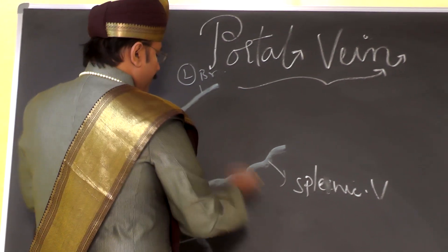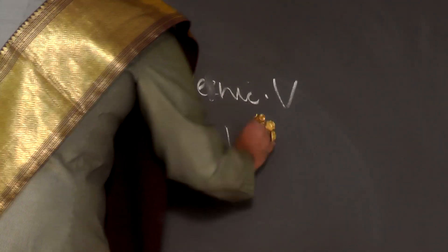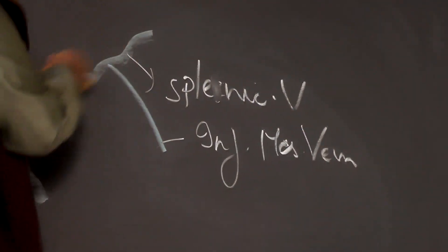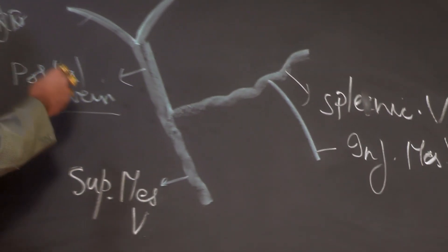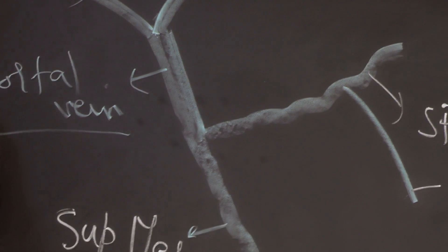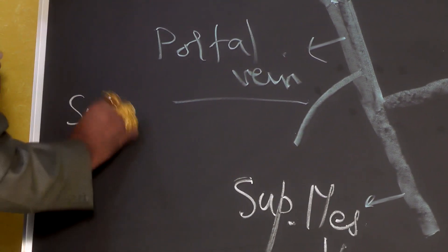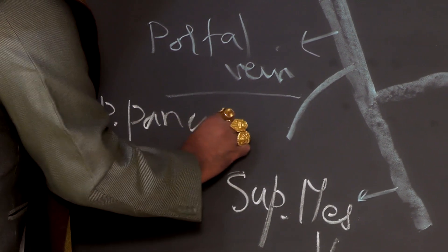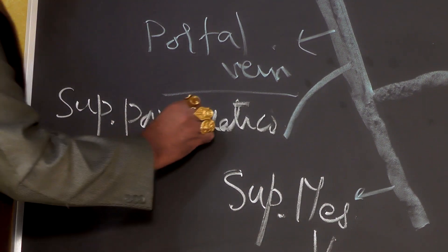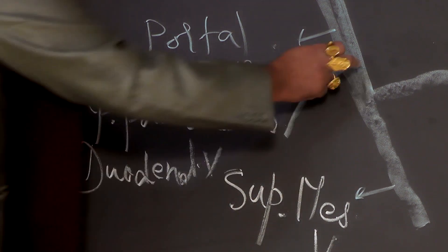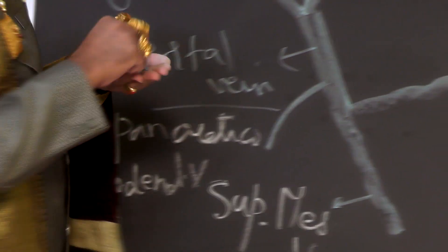Into the splenic vein, there is the inferior mesenteric vein opening. Into the trunk of the portal vein, there is opening of the superior pancreaticoduodenal vein. So the superior pancreaticoduodenal vein is opening into the main trunk of the portal vein.